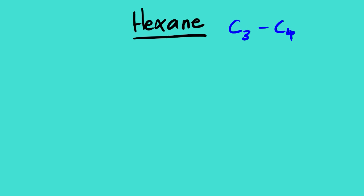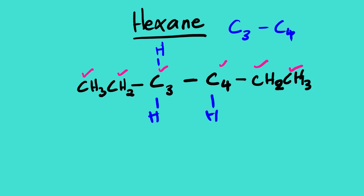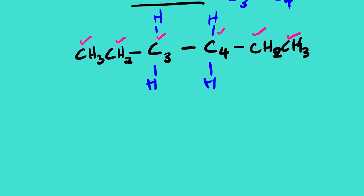This is C3 and C4. Here we have 6 carbons, so we are going to have an ethyl group on one side. Counting carbons: 1, 2, 3, 4 — we need another ethyl group on the other side as well. For carbons 3 and 4, the remaining substituents are hydrogens.